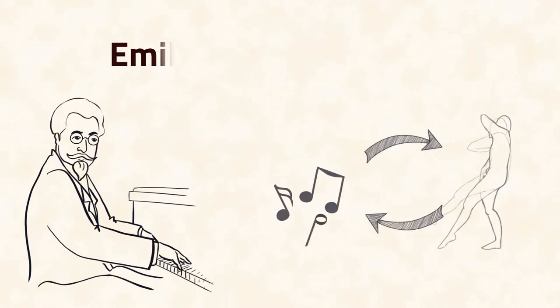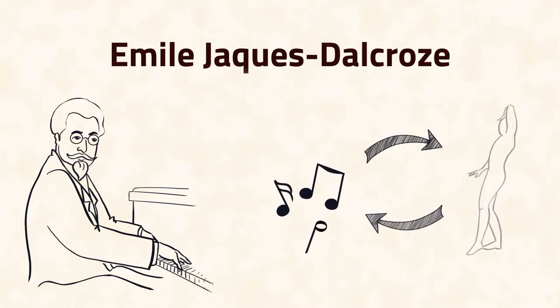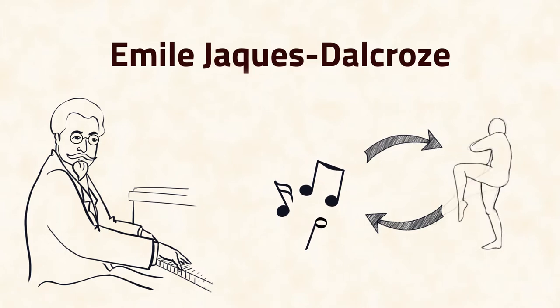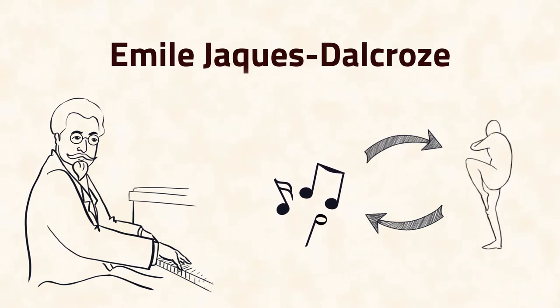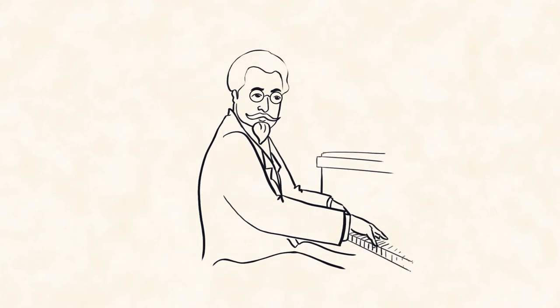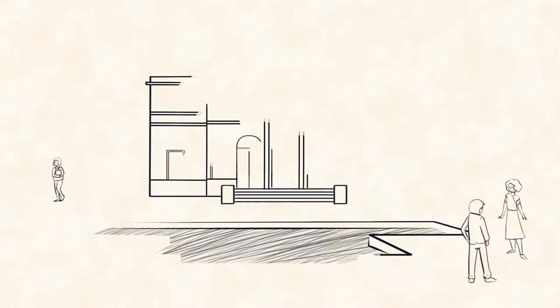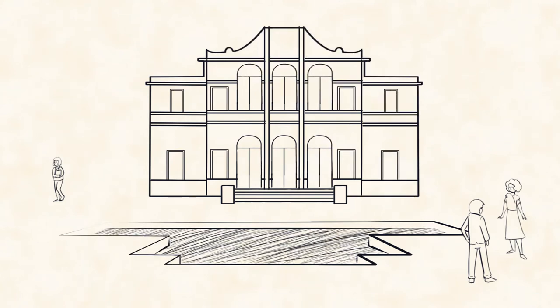Around the year 1900, the Swiss composer and musician Emile Jacques Dalcroze was the first to consciously make use of the connections between music and movement for learning processes. It was his aim to make the basics of music more accessible to his students at the Conservatory of Geneva by using whole body movements.